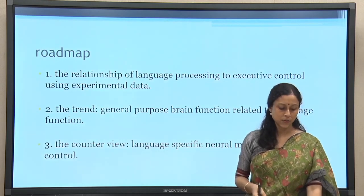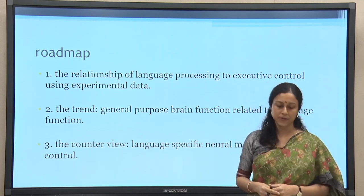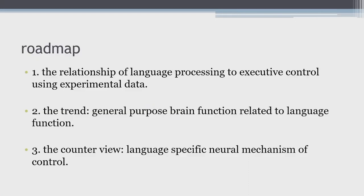Now in this part, we will look at the relationship of those cognitive control networks with respect to language functions — how various types of language processing are interrelated with the cognitive control mechanism in terms of the brain regions responsible for those control systems. We will discuss this relationship through various experimental research spanning various types of language processing. Then we will go ahead on the assumption that general purpose brain functions are related to language-related processing as well.